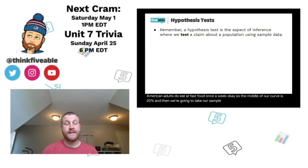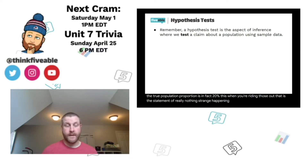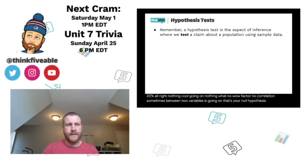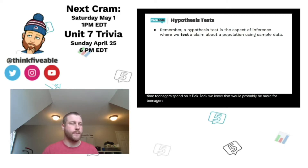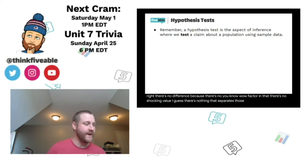We take our sample and see where it falls if the true population proportion is in fact 20 percent. The null hypothesis is a statement of nothing strange happening — the article says it's 20 percent, it is 20 percent, no wow factor. For example, comparing time adults spend on TikTok versus teenagers — we'd expect teenagers to spend more, but the null hypothesis would be that it's the same; there's no difference.